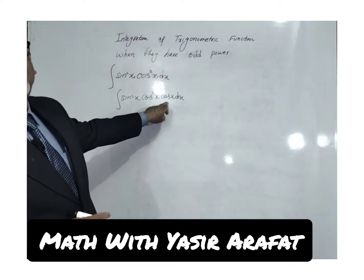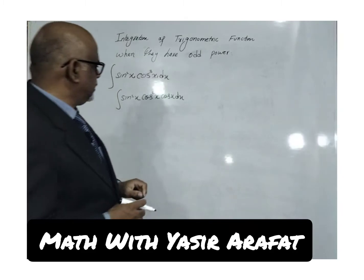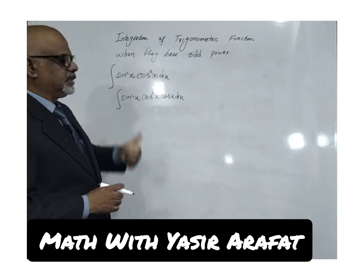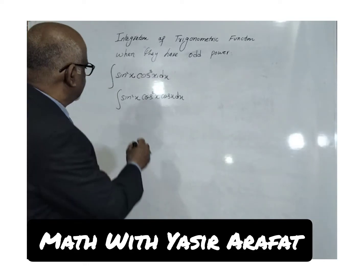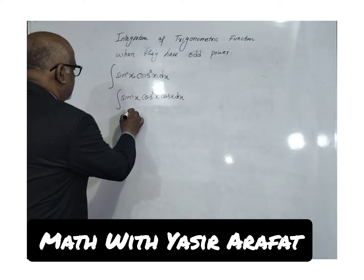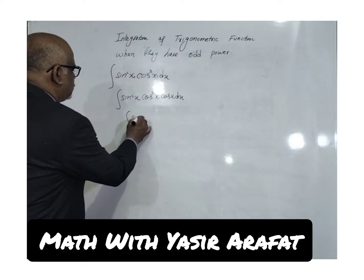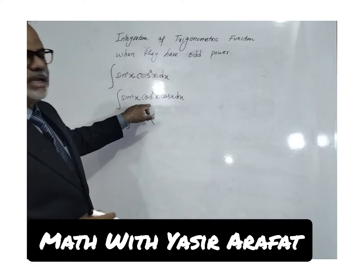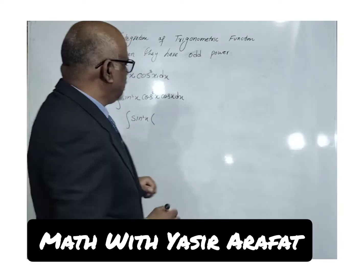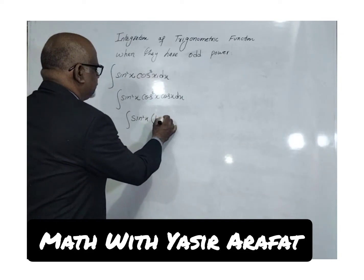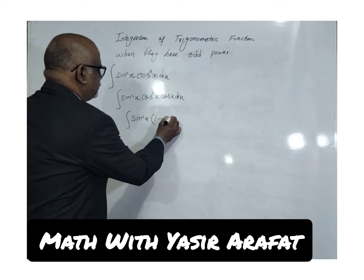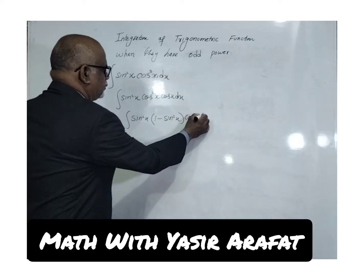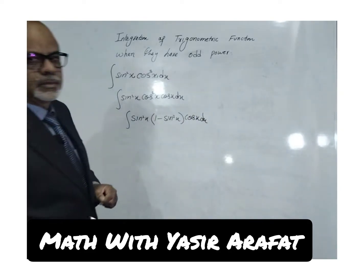We have to separate cos x, and then change cos²x to its relative formula. Since this involves sin²x, we use: cos²x = 1 - sin²x.